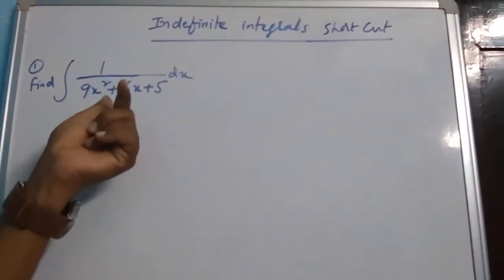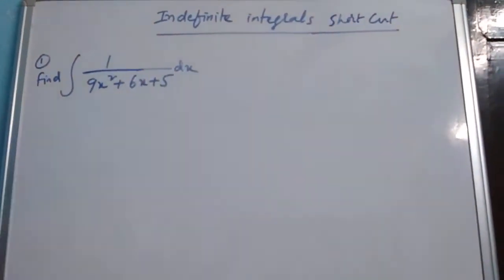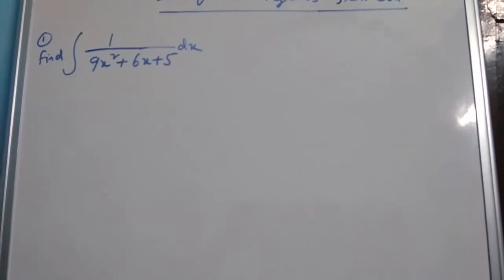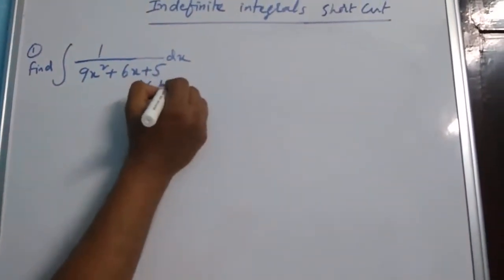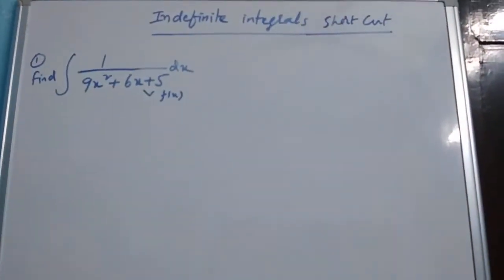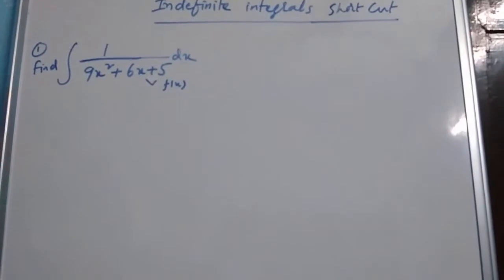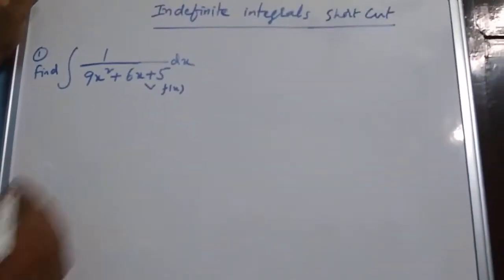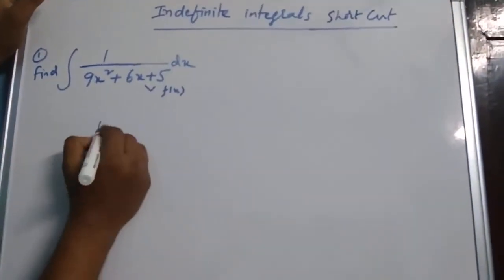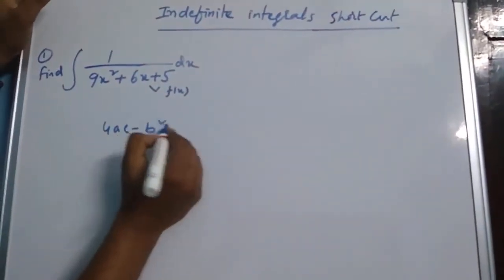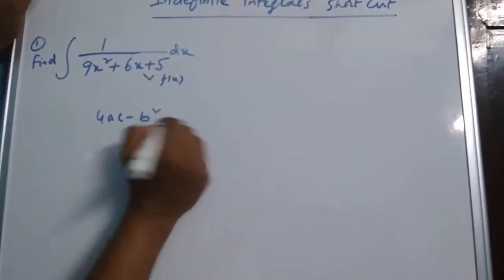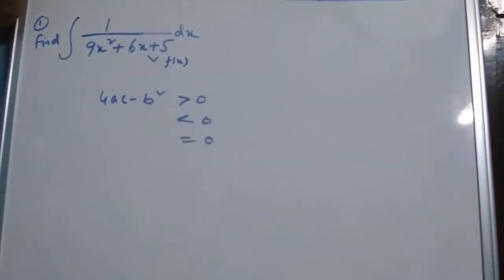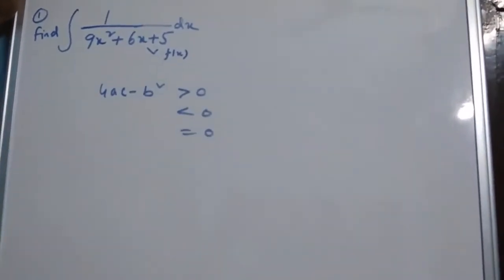Find the integral of 1 by 9x squared plus 6x plus 5. The function is in the denominator; let us suppose this as f of x. In order to solve this integral, it depends on 4ac minus b squared — we need to find out whether 4ac minus b squared is greater than 0, less than 0, or equal to 0. We have to check it.